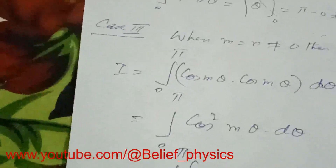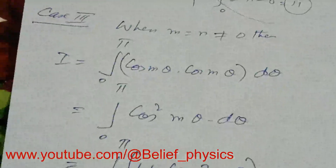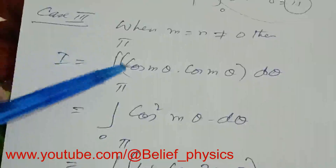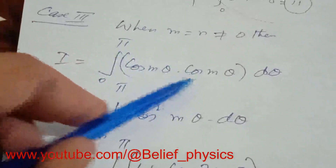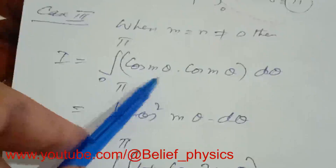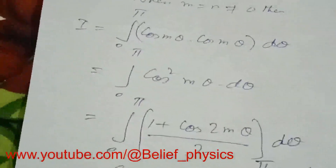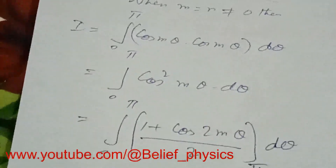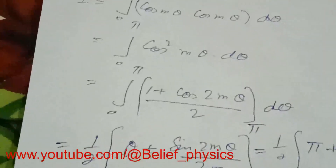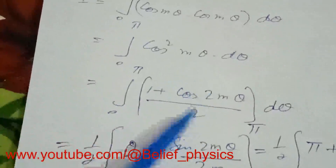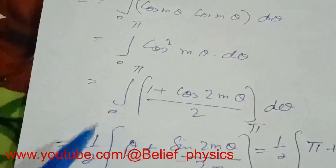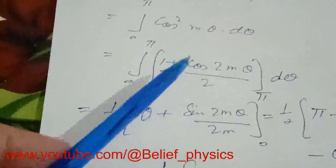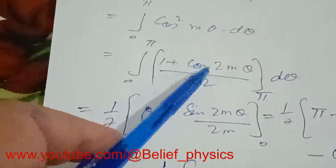The third case is when m equals n but not equal to zero. The integral becomes the integral from zero to pi of cos(m theta) times cos(n theta) d theta, which is the integral of cos squared(m theta) d theta.